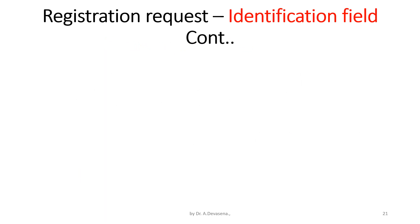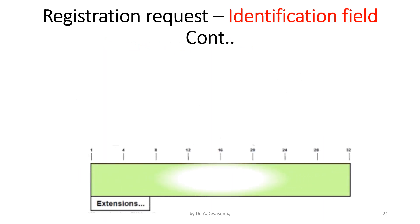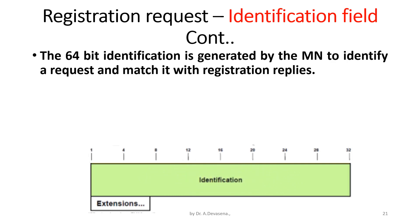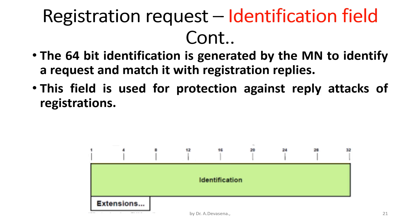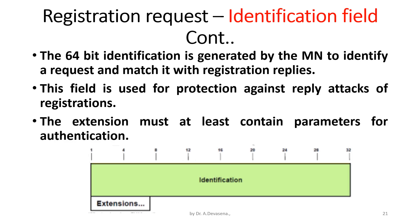The 64-bit identification field is generated by the mobile node (MN) to identify a request and match it with registration replies. This field is used for protection against replay attacks of registrations. The extension must at least contain parameters for authentication.